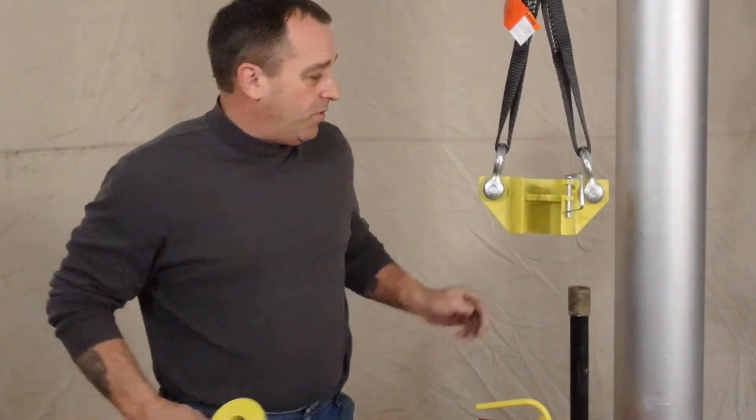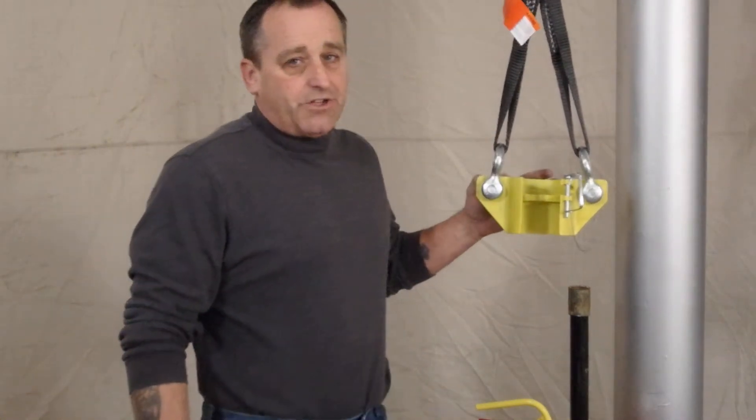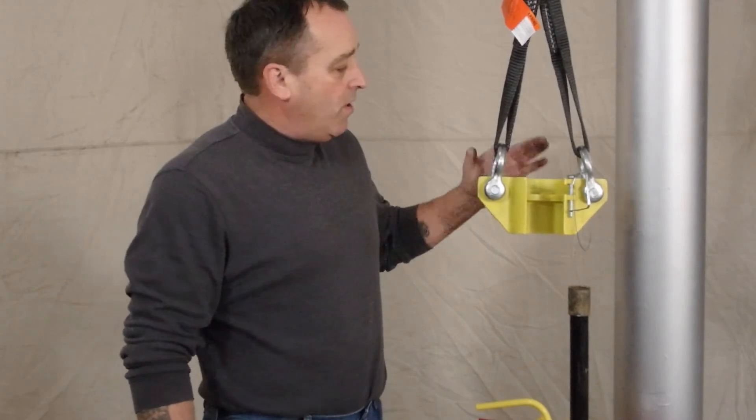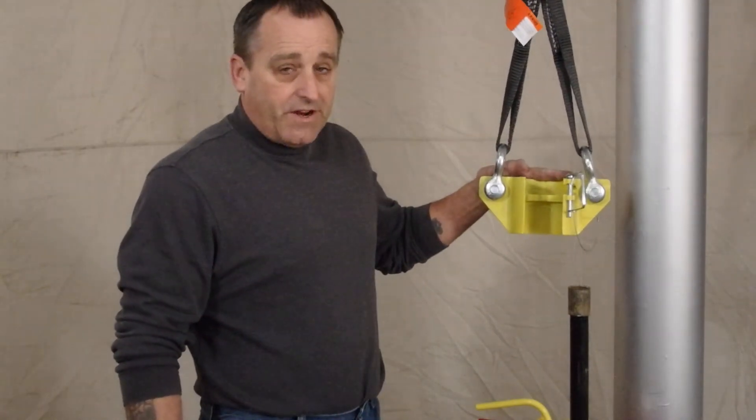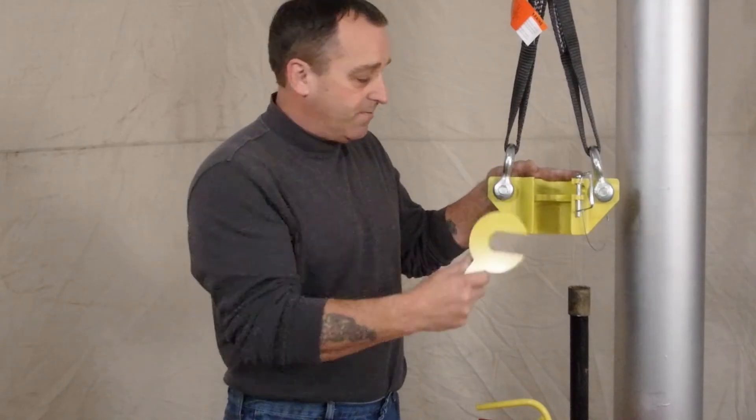This device allows you to pull one inch, inch and a quarter, inch and a half, and two inch pipe all with the same elevator body by the use of a die that slips in.